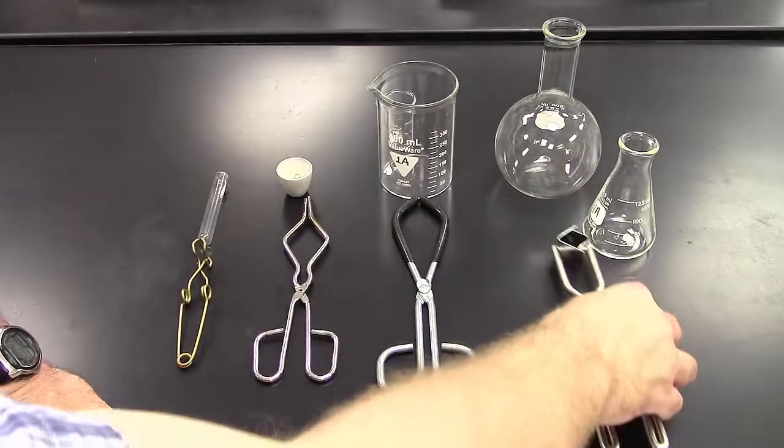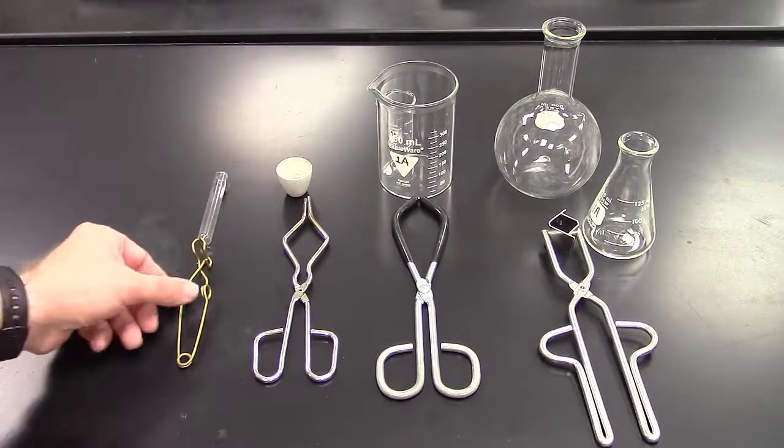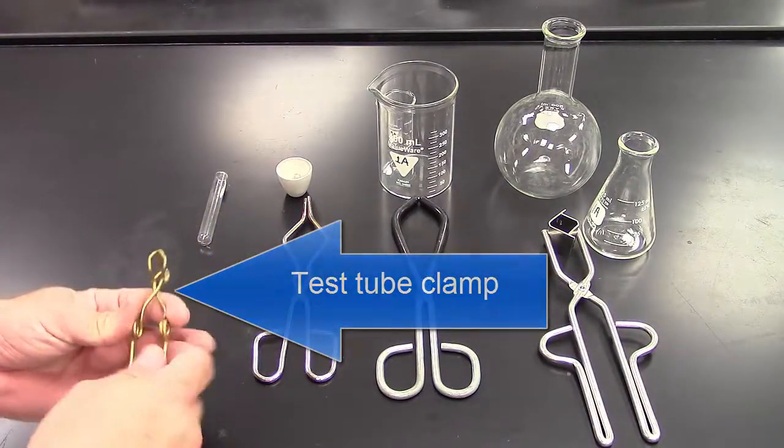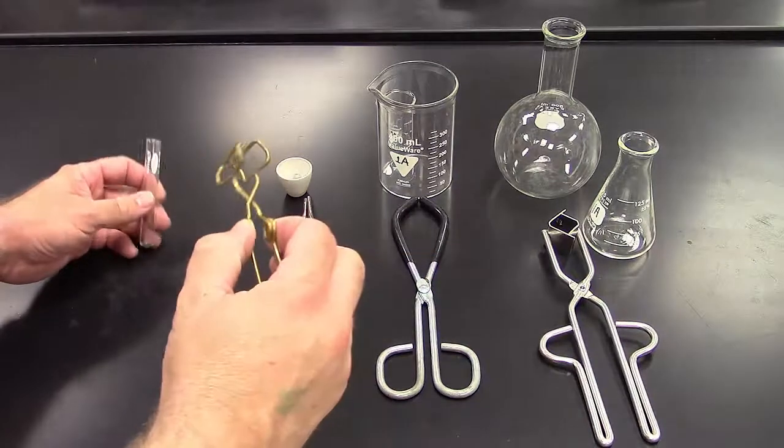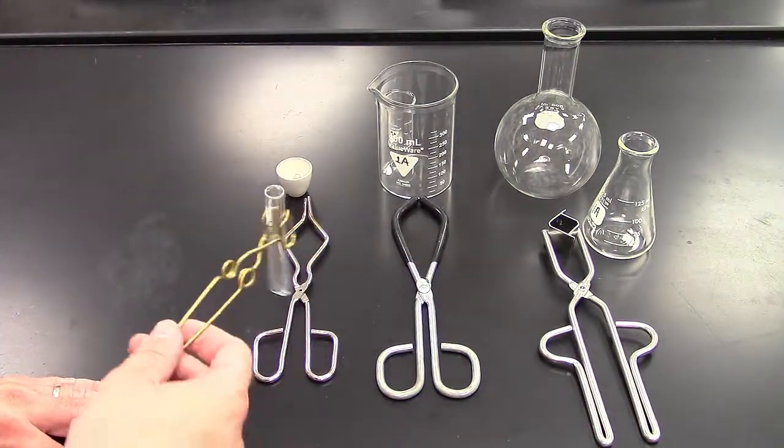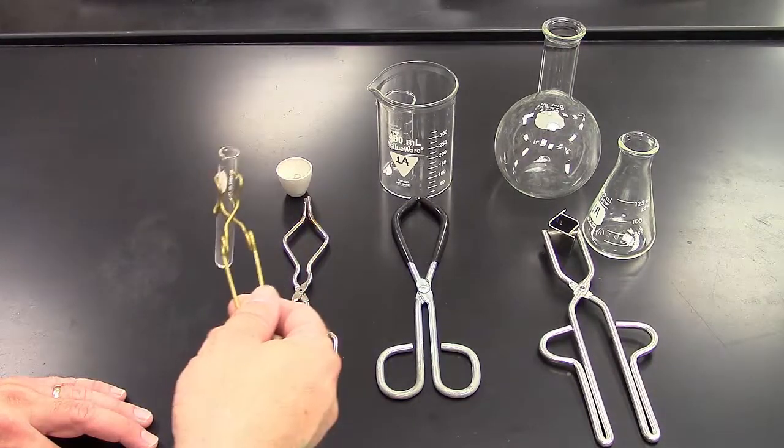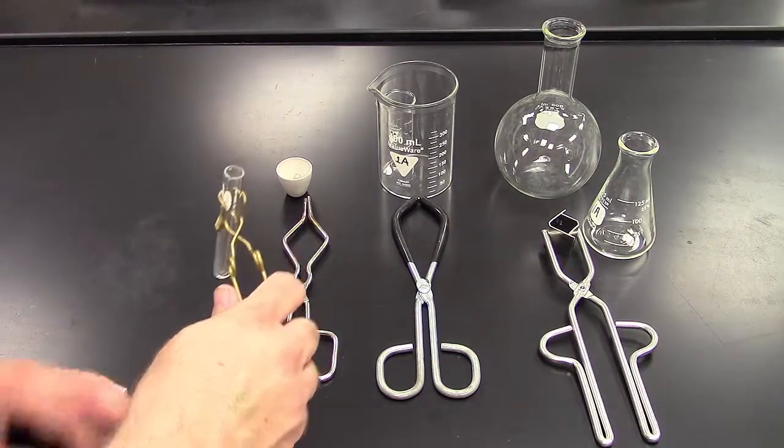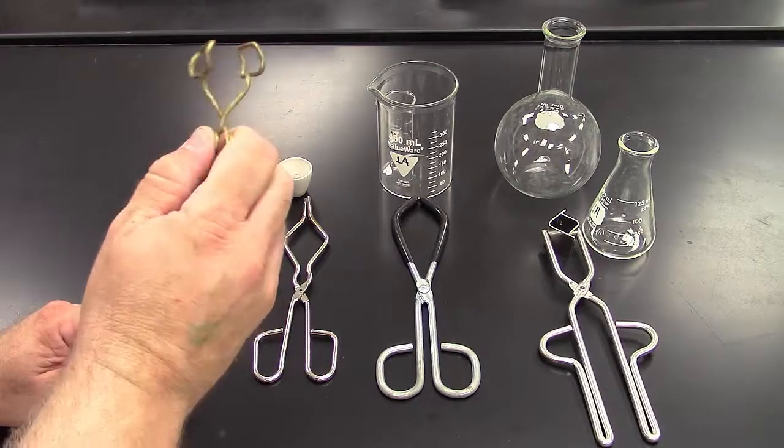And then the last one is a test tube clamp. Now, the tricky thing about these is just realize that you open it by pushing it and then you grab it like this. Now, here's the thing about using a test tube clamp is normally when you grip something, it gets tighter, but notice this is the design that actually lets go.